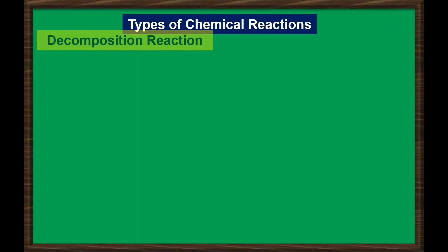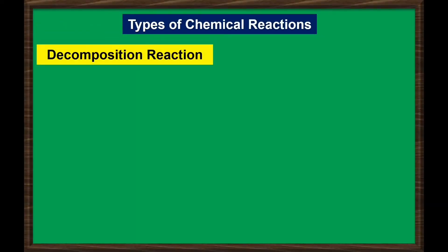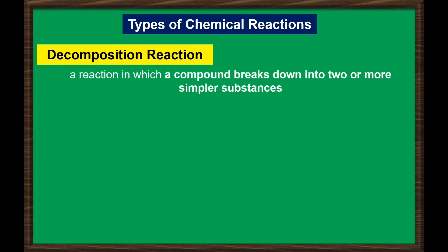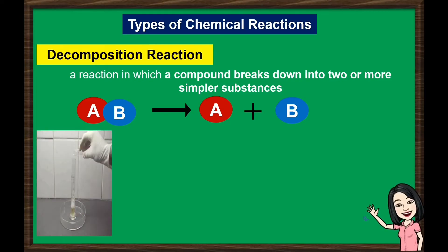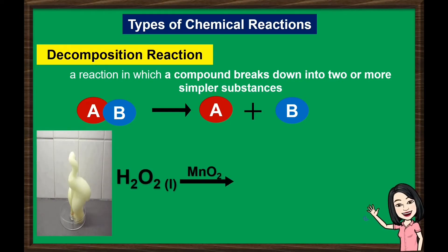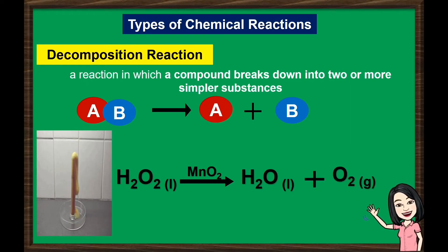Next is decomposition reaction. It is a reaction in which a compound breaks down into two or more simpler substances. An example is when hydrogen peroxide, with the presence of the catalyst manganese dioxide, produces water and oxygen gas.